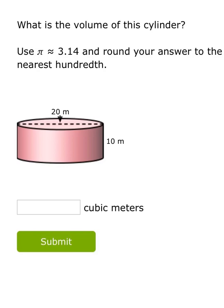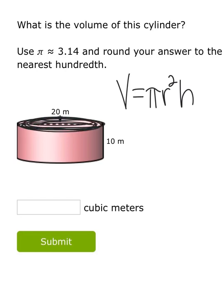The formula to find the volume of a cylinder is pi radius squared times height. Basically what you're doing is taking the area of the base, and we know the base shape is a circle, so we're finding the area of the circle and then multiplying it by the height. That's going to tell us the volume of a cylinder.